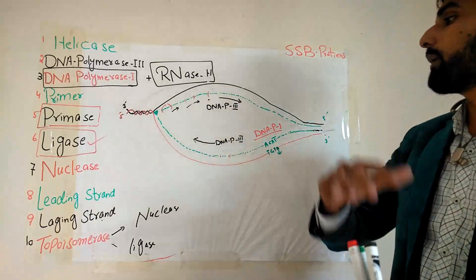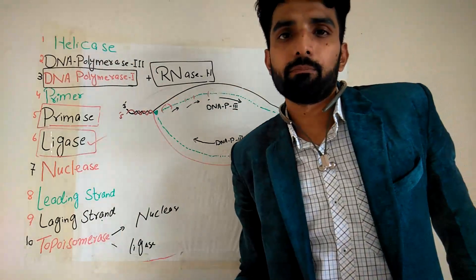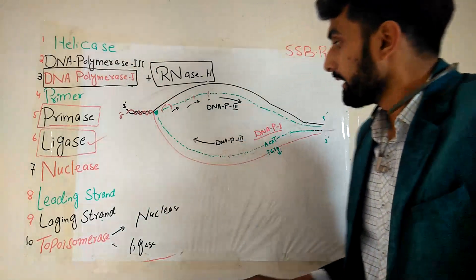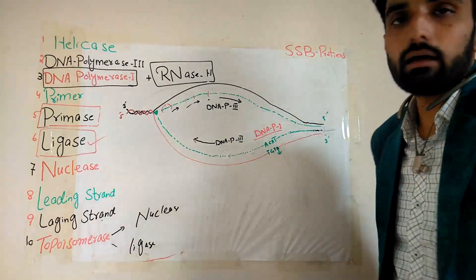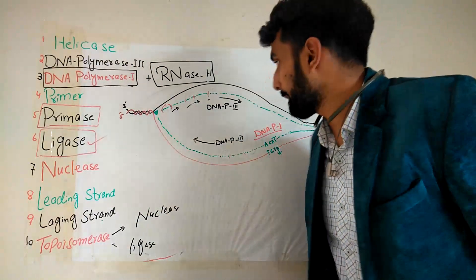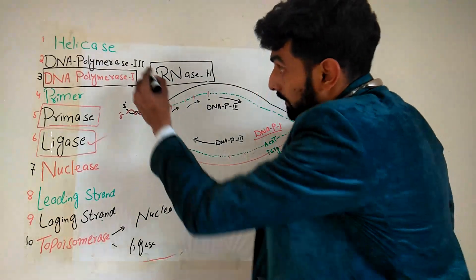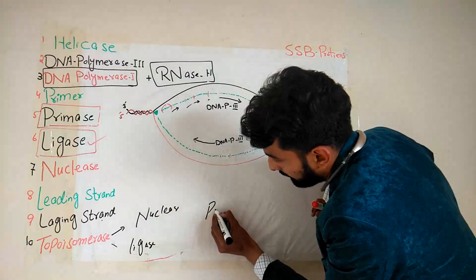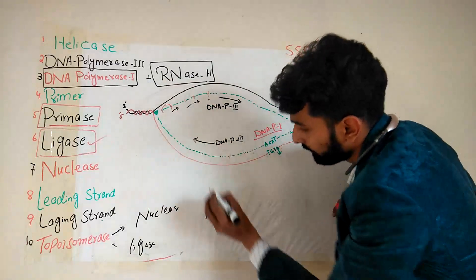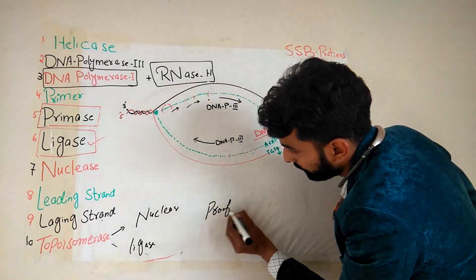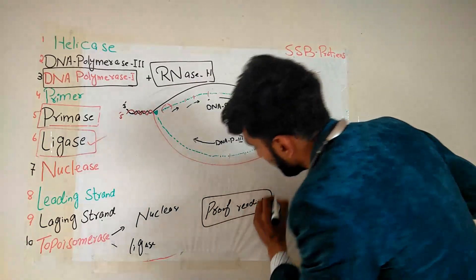DNA polymerase 3 also has another capability called proofreading. DNA polymerase 3 can proofread.